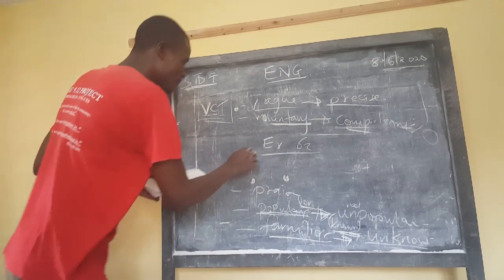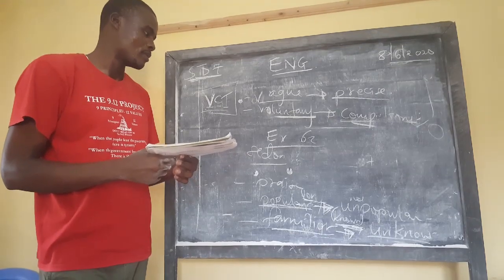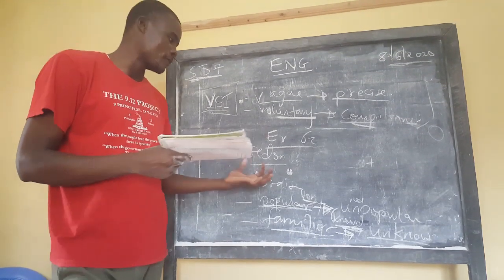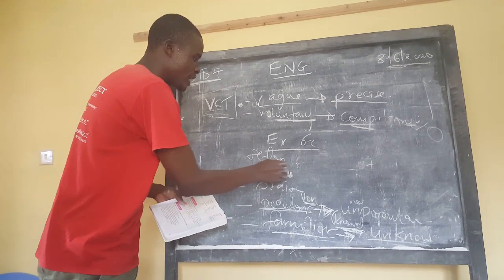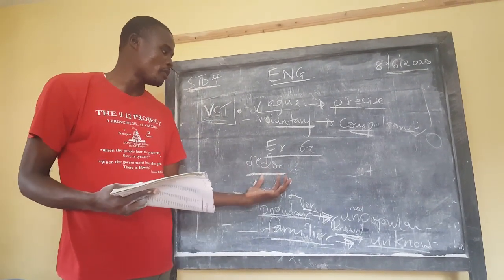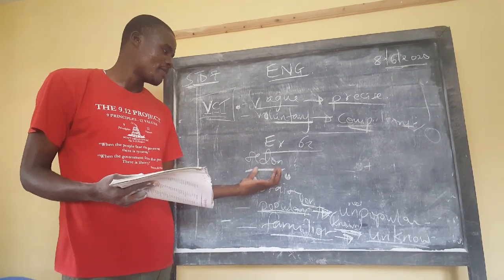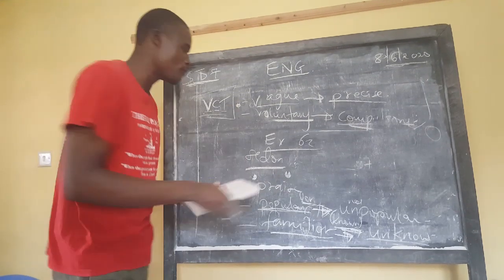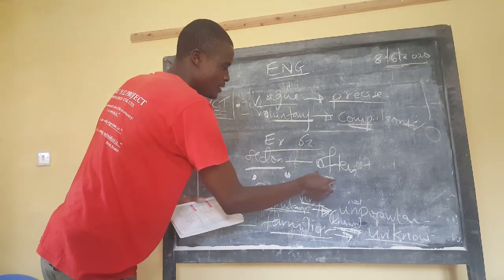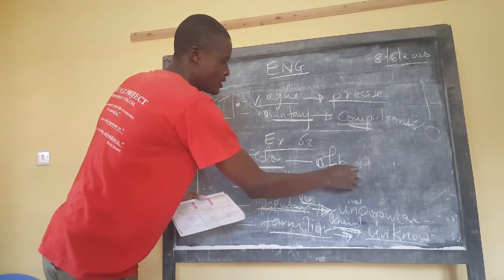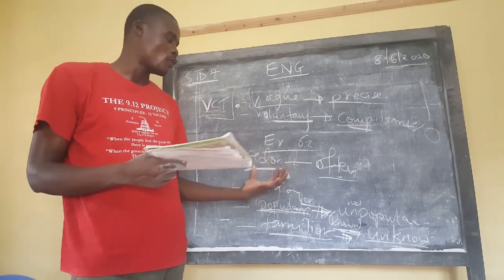The word 'seldom' is among the adverbs of frequency. It means somebody does something once in a while, same as rarely. The opposite of seldom will be 'often'. In terms of pronunciation, note that the T in 'often' is silent — say 'often', not 'oft-en'.